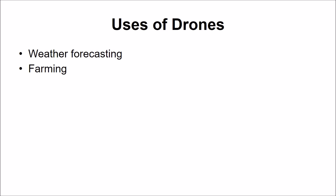Second, Farming: drones are an inexpensive way of surveying large farmland areas. Fitted with proper sensors, they can accurately capture crop data that farmers can use to increase their harvest. Third, Military: since they are unmanned and small, drones are playing an increasingly crucial role in protecting hostile borders by providing real-time images of enemy movements.